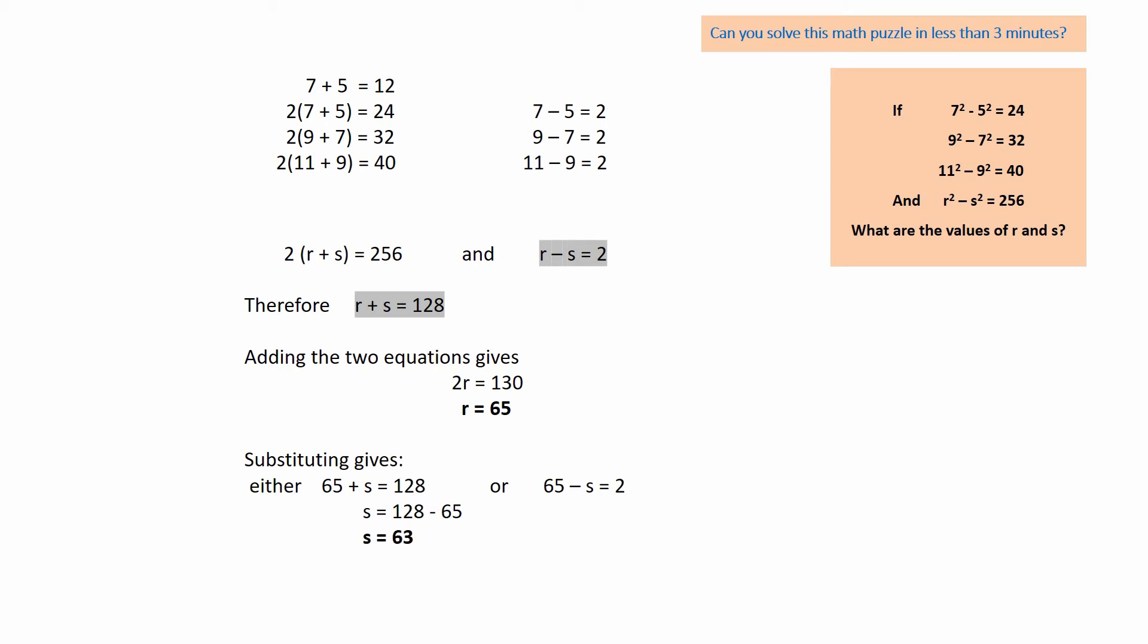Or, if you chose the right equation, add S to both sides, then subtract 2 from both sides to obtain S equals 63 again, giving the final solution R equals 65 and S equals 63.